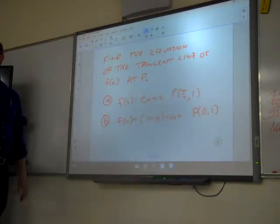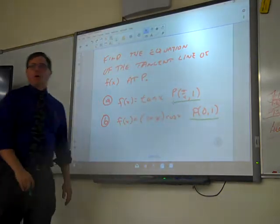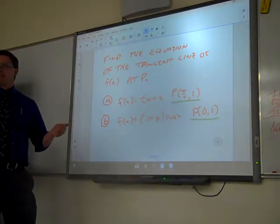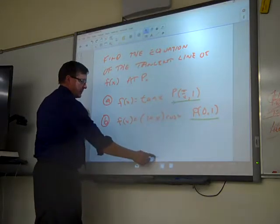What do you need for a tangent line? Point and a slope. These problems give you the points. So all you need is a slope at that instant. And to do this rather quickly, just so you see it.